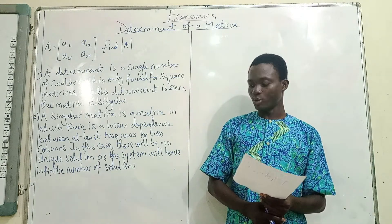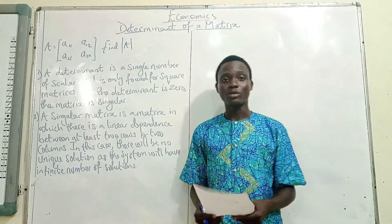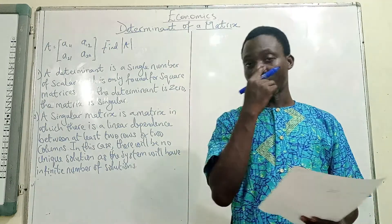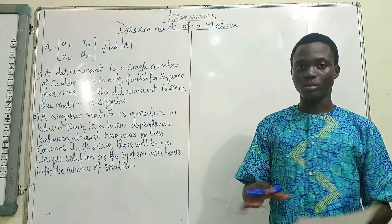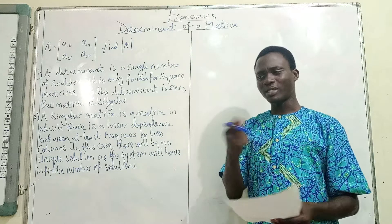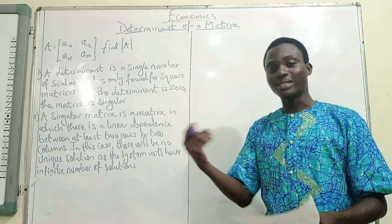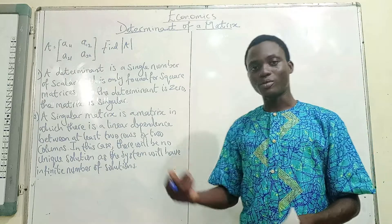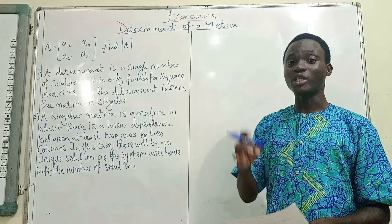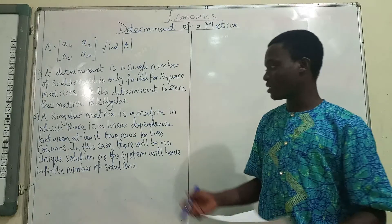We're going to start talking about using Cramer's rule and the inverse method to solve a system of linear equations. When the inverse method is used, there will be a point where something has to be divided by the determinant. If the determinant is zero, dividing by zero gives us infinity. So the determinant shouldn't be zero for us to have a unique solution.